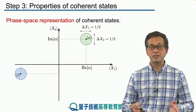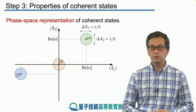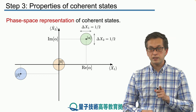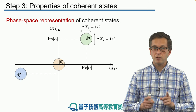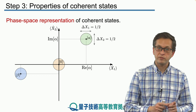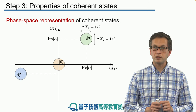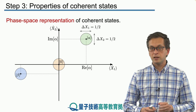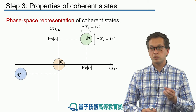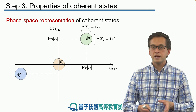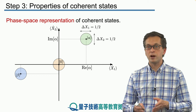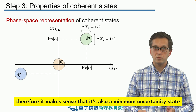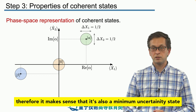When alpha is zero, we plot it at the origin of the Argand diagram — and in fact this state is our vacuum state. We now see why in previous lessons we obtained the result that the vacuum is a minimum uncertainty state: the vacuum ket zero, considered in the context of number states, is a special coherent state where alpha equals zero, and therefore it is also a minimum uncertainty state.